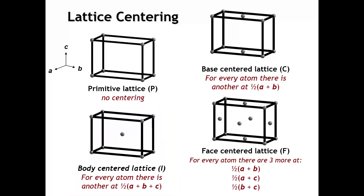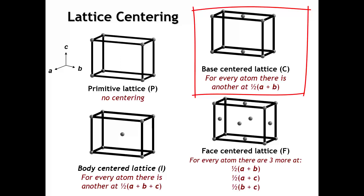Another way to create a centered lattice is to put a second lattice point at the center of two opposite faces — that's called a base-centered lattice. The conventional setting places that extra lattice point in the face perpendicular to the C axis, giving a C-centered lattice, where every atom has an equivalent atom connected by the vector one-half A plus one-half B. Non-standard settings include B-centered, where the extra point goes in the face perpendicular to the B axis, and A-centered, where it goes in the faces perpendicular to the A axis.